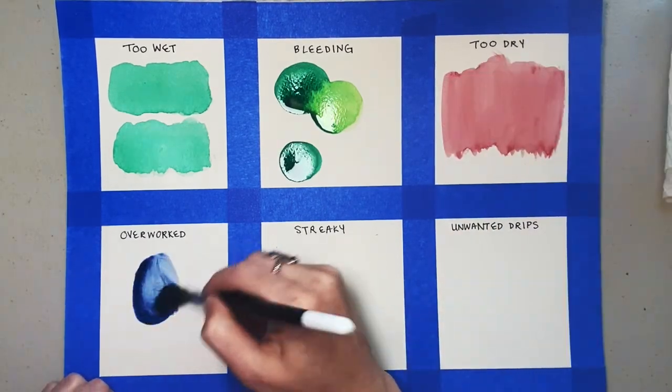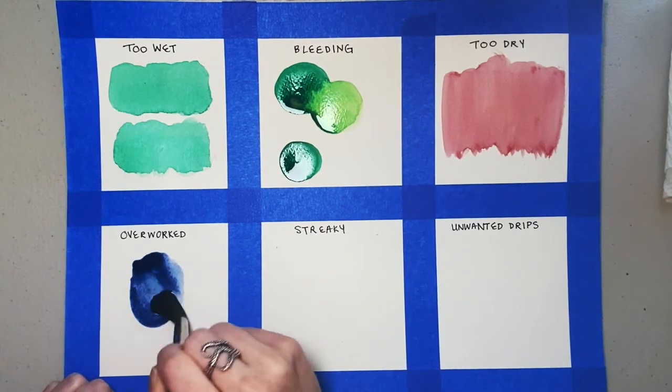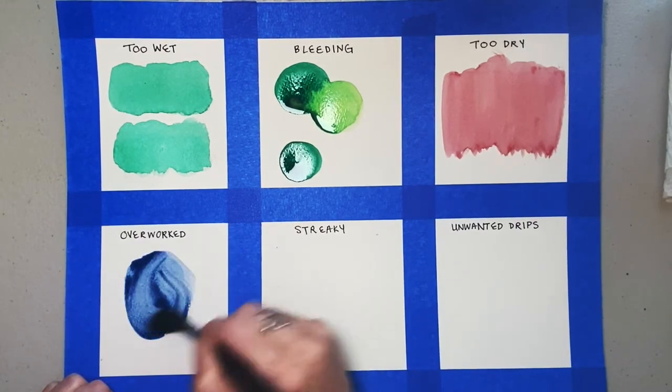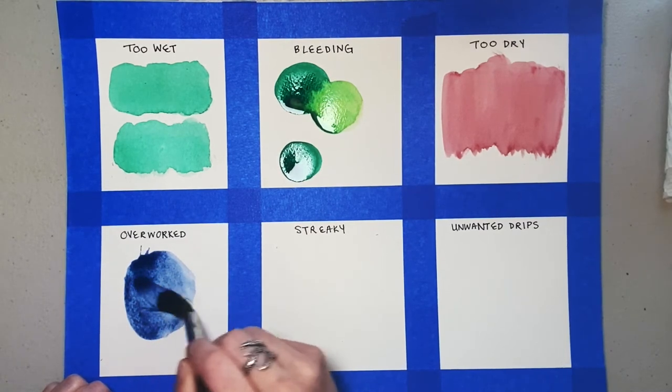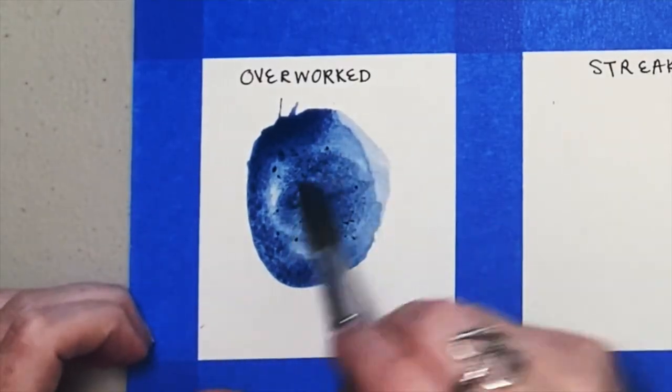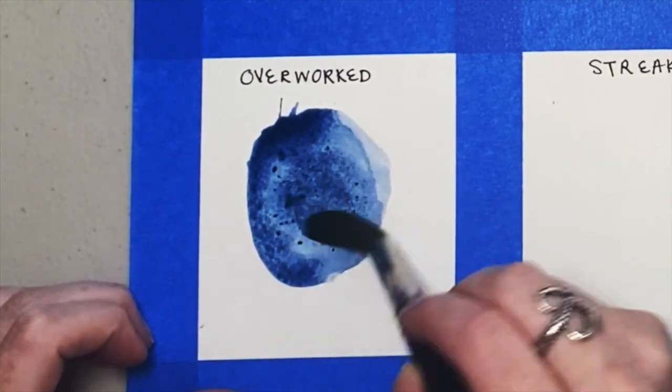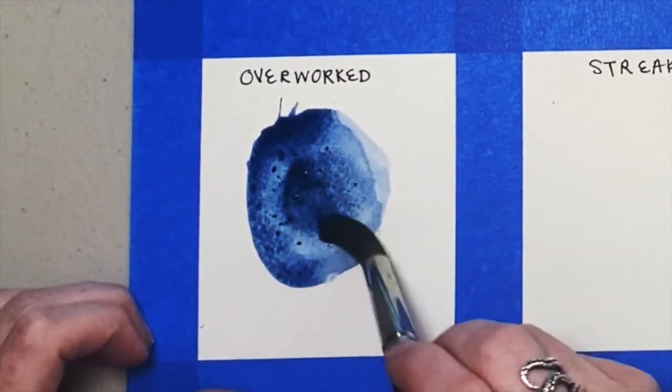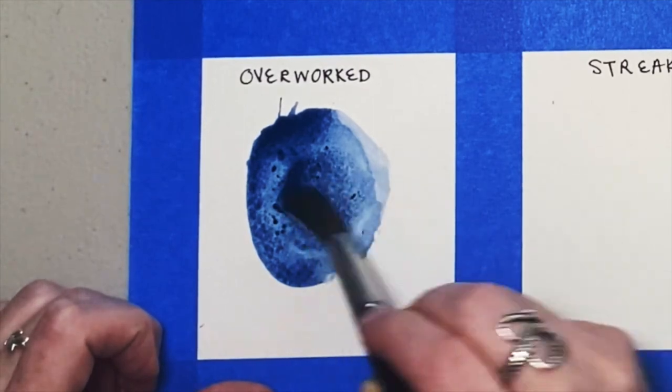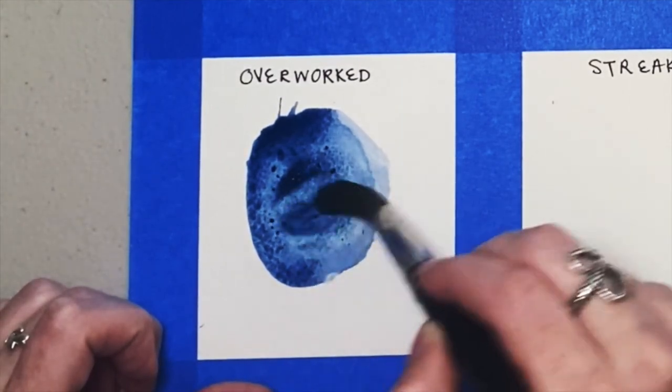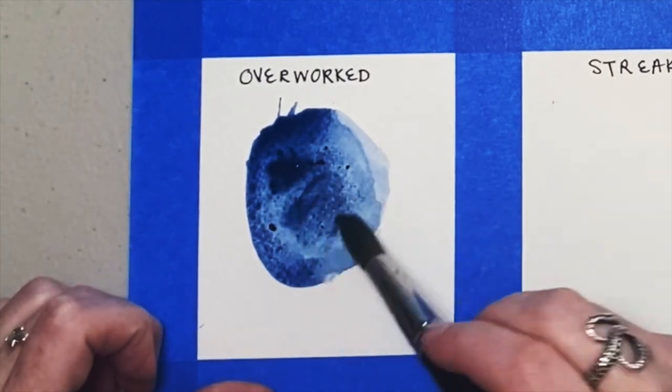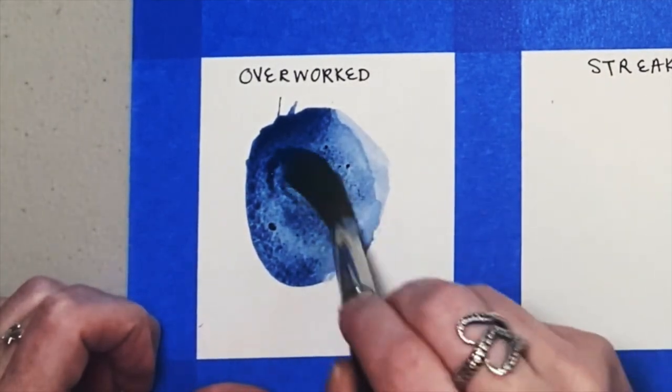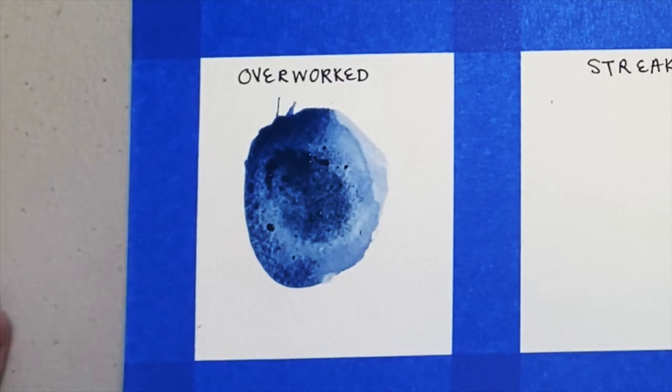Overworking your paper can happen when you keep working or reworking a spot on your paper. Eventually enough brush strokes will cause the pulp of the watercolor paper to pull apart and into your artwork. This will not only ruin your paper, but create blotchiness as the paper bits will suck up all the pigment placed there. There's not much you can do after your paper has been overworked, so try to be cognizant of this when you're making your art.